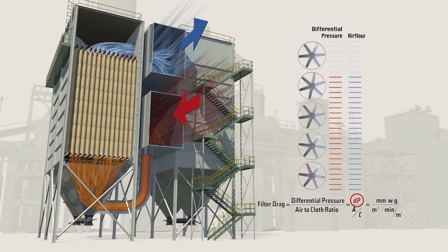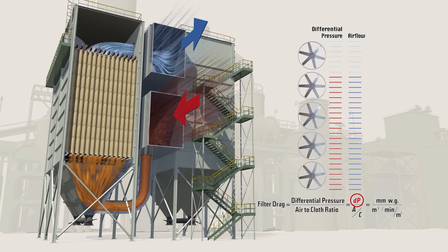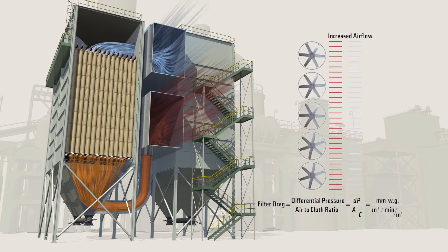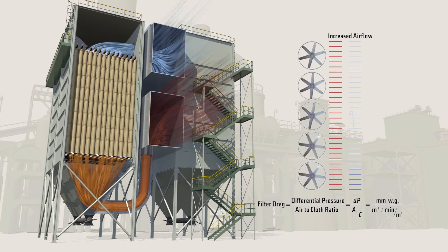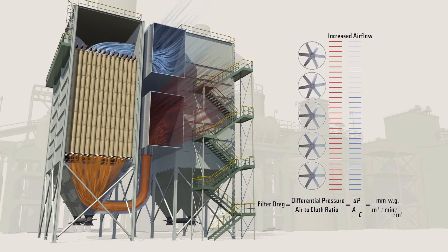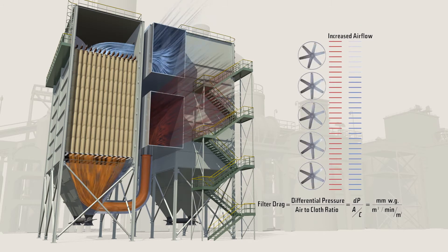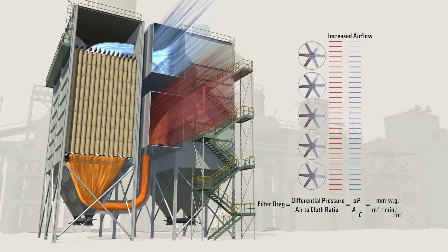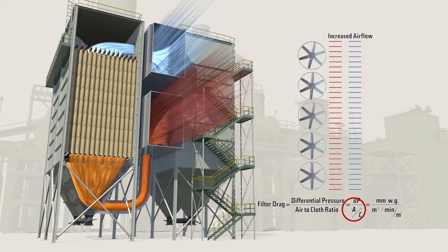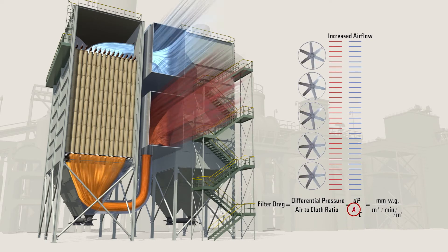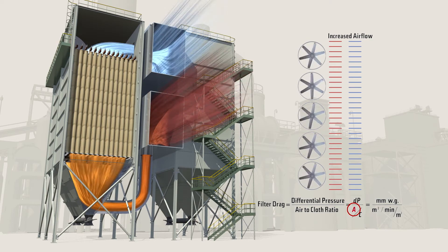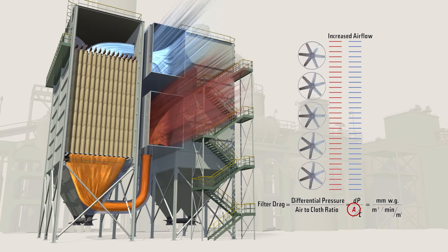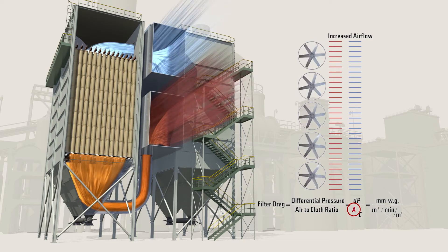A bag house operates more efficiently with higher airflow. With Gore low drag filter bags installed, plants can maintain the same DP with higher airflow. Elevating the air to cloth ratio enables the bag house to operate at peak efficiencies, improving throughput and product collection.